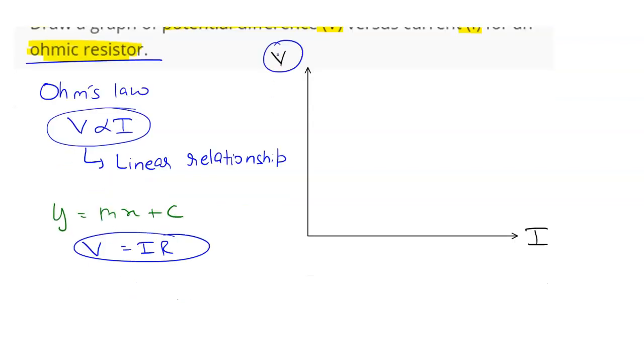Here on the y-axis we have V, and on the x-axis we have current I. So this is equation 1 and this is equation 2.